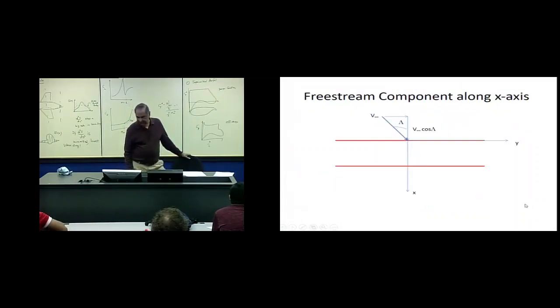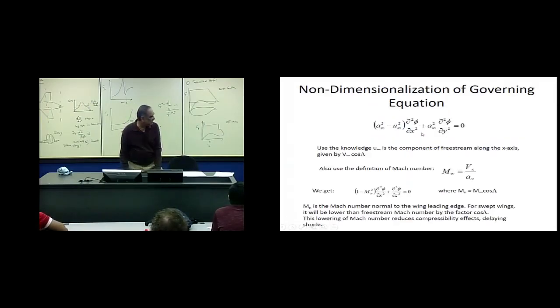And this U infinity is the x component of free stream velocity, which is V infinity cosine lambda. Therefore, the governing equation has got this has the velocity, V infinity cosine lambda, not the full V infinity. Therefore, when you look at the governing equation, it does not have the full Mach number, but it has got a Mach number times cosine lambda.